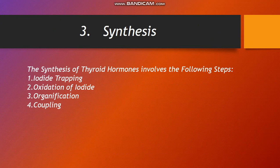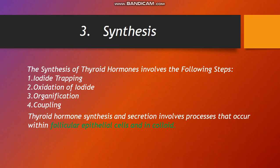Synthesis of thyroid hormones involves the following steps: iodide trapping, oxidation of iodide, organification, and coupling. The amino acid which is very important in the synthesis of T3 and T4 is tyrosine, which also has significance in the formation of catecholamines — epinephrine and dopamine. Tyrosine is the basic material for the synthesis of thyroid hormones. The process occurs within follicular epithelial cells and in the colloid.